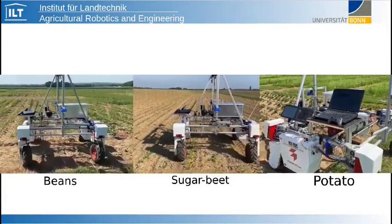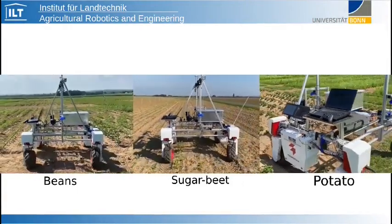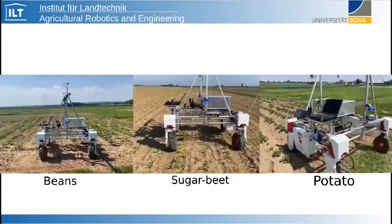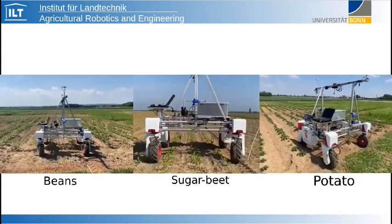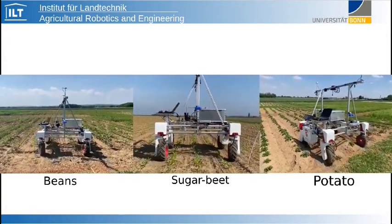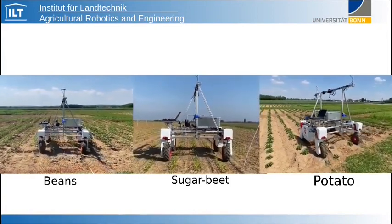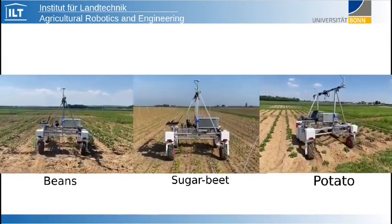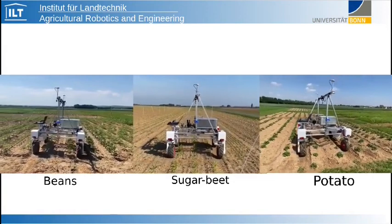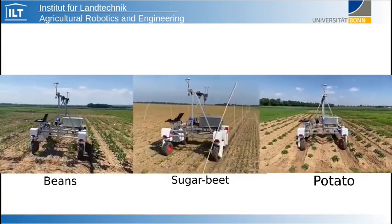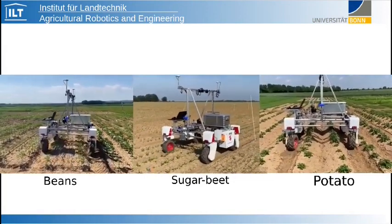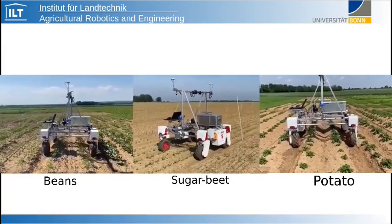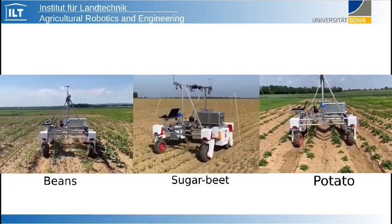Here you can see footage of the robot being guided through different crop rows using our navigation scheme. Please consider the changes in illumination, crop canopy types, and the presence of weeds in real fields.